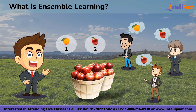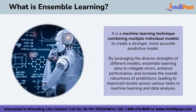From those three friends, two said it was an apple and one said it was an orange. So Sam concluded that the fruits in the basket are apples, because apples got the majority votes. That's how ensemble learning works — it works on majority votes to make predictions. Technically, ensemble learning is a machine learning technique which combines multiple individual models to create a stronger and more accurate predictive model.